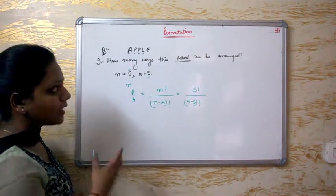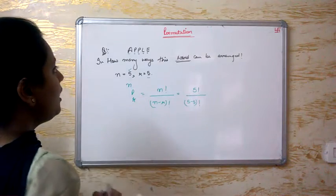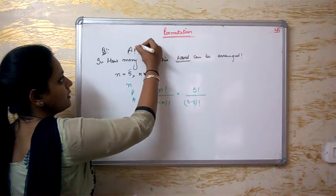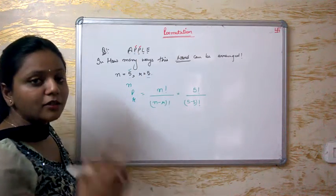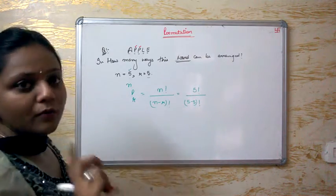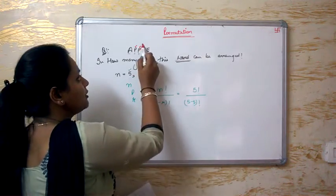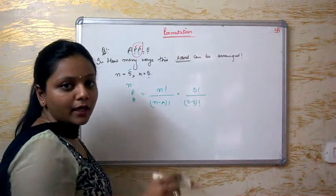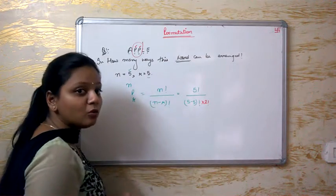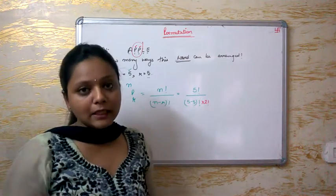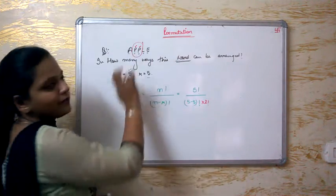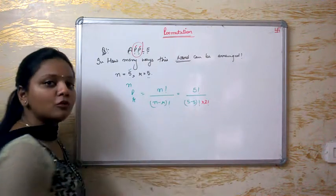But this is another kind of question. Why? Because in this particular question, P is repeating itself — there are two P's. A appears once, P appears twice, L is one, and E is also one. So whatever letter repeats, we divide by its factorial. For the two P's we write 2 factorial in the denominator.